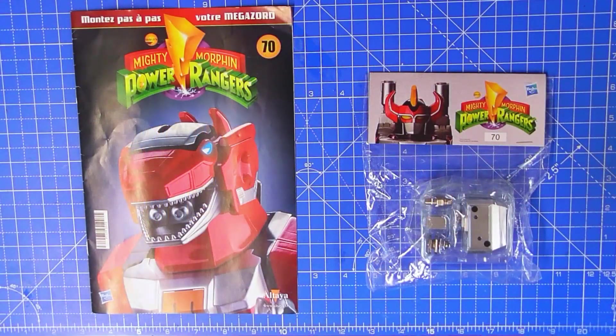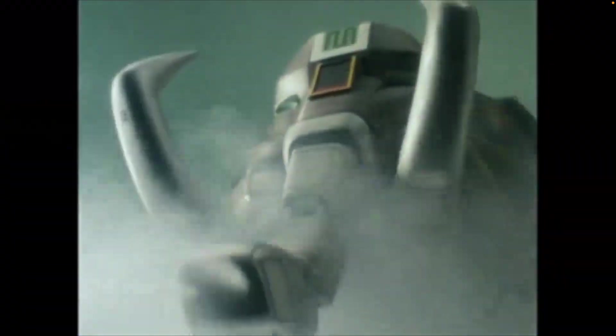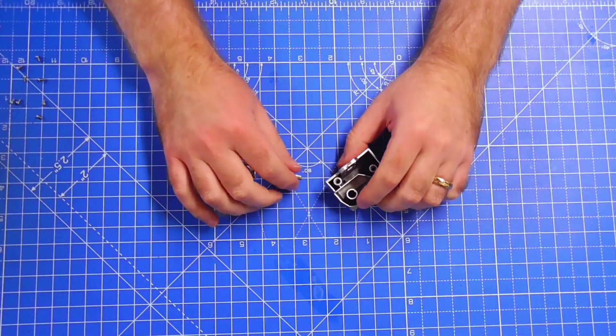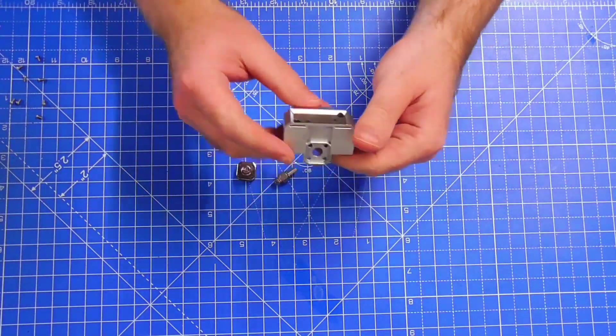Hello and welcome to the next episode of Build the Megazord where we're looking at issue 70 this time and we are continuing with the shoulder blade of the Mastodon, the gorgeous Black Ranger Zord and once again it's going to be a short video this time.